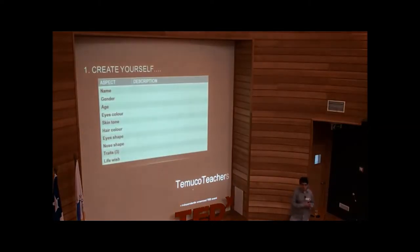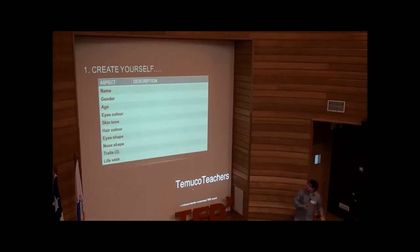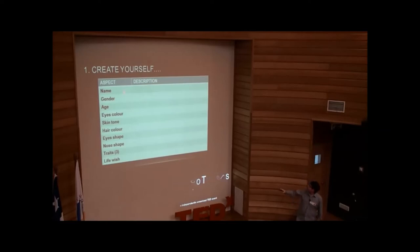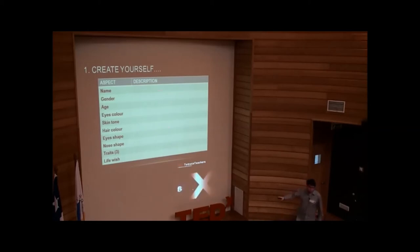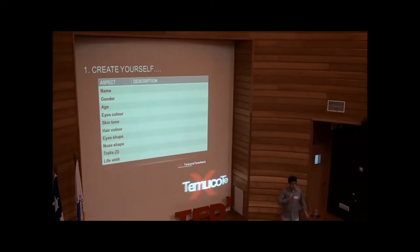This chart is the first step in the evaluation process. Once students have finished creating their character, they must fill out this chart. There are several aspects to fill in: name, gender, age, eye color, skin tone, hair color, eye shape, nose shape, traits, and life wish — and in this column they have to describe every aspect mentioned. Traits and life wish are very important elements in the gameplay process.